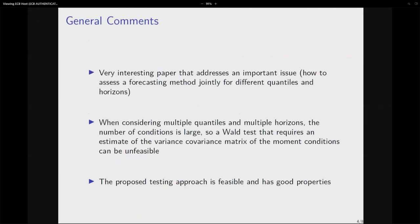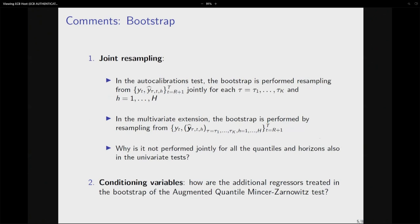The discussant concludes that this is a very interesting paper addressing an important issue for anyone deciding which forecast or model to use. The dimensionality problem is solved in a smart way with a feasible test statistic with good properties. The paper also contains a hidden gem in the appendix — a horizon monotonicity test — which the discussant finds very interesting and wonders why it is in the appendix rather than the main paper.